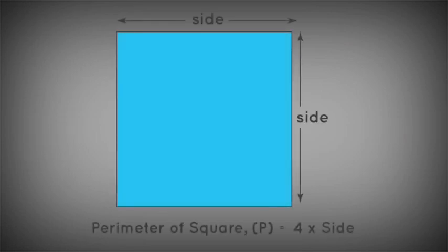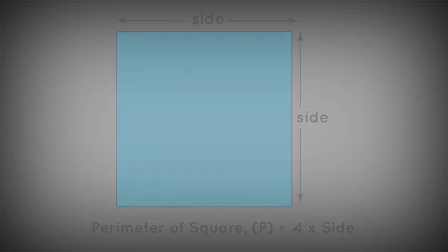Let's see some examples which we studied last year. The perimeter of a square can be measured using the formula: perimeter is equal to four times its side. That is, if we know the measure of one side, by multiplying that side by four we get the perimeter of the square.